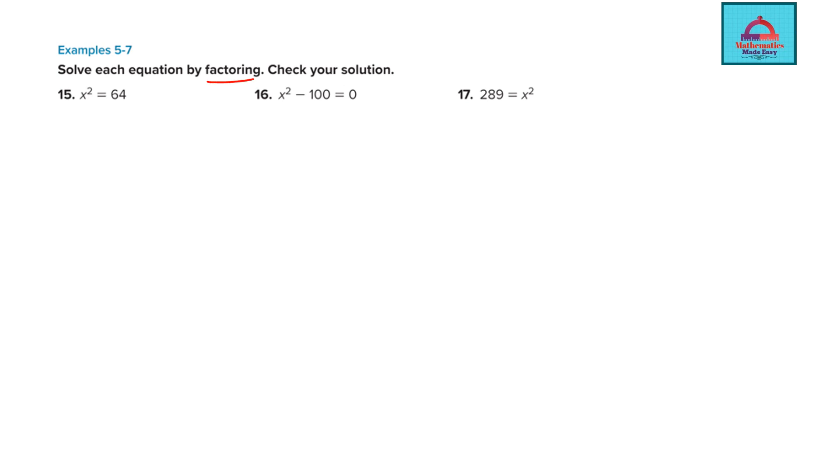Let's begin by solving each equation by factoring. Factoring means we need to find the value of x, the roots, and then check your solution. For question 15, x² = 64, this is a square equation. Can we write 64 as a perfect square? Yes, 8². I'll move x² to the other side: x² - 8² = 0.